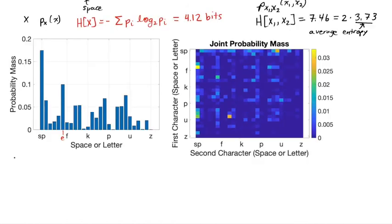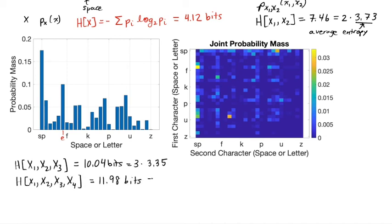I wrote the same MATLAB code to compute the entropy of three character combinations. Again, the same source. And I found that the three character combinations have 10.04 bits, which is three times 3.35 bits. And for four letter combinations, we have four times 2.99 bits.